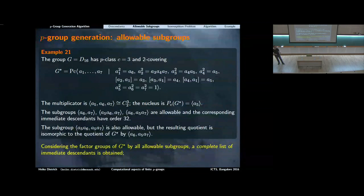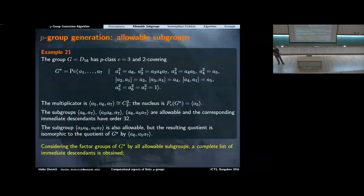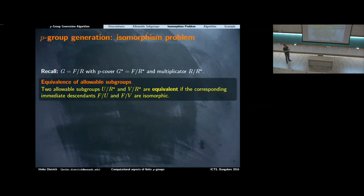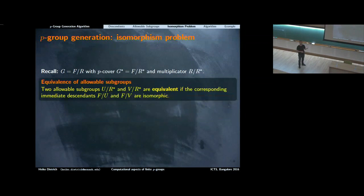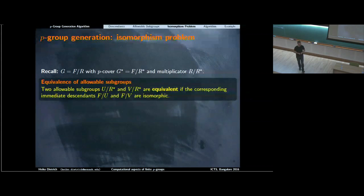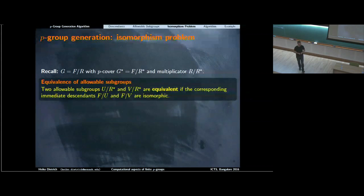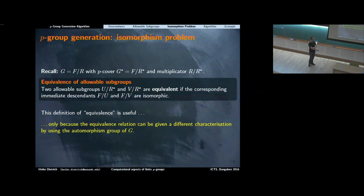So the next thing to discuss is: when are two immediate descendants isomorphic? We call two allowable subgroups equivalent if the corresponding immediate descendants are isomorphic. If these two groups are isomorphic, we call the allowable subgroups equivalent. This is an equivalence relation, and it can be rephrased in terms of the automorphism group of G — which is why this notation was invented.